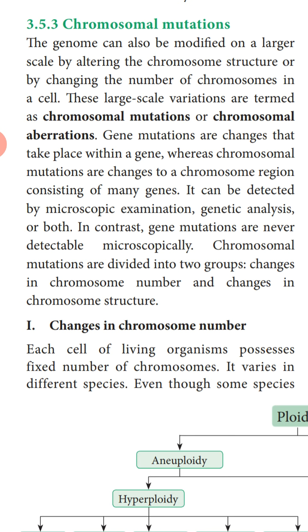The definition you can mark: genome can be modified — genome means the total number of genes found in an organism. The genome can be modified on a larger scale by altering the chromosome structure or by changing the number of chromosomes in a cell. These large scale variations are termed as chromosomal mutation or chromosomal aberrations. Gene mutations are changes that take place within a gene, whereas chromosomal mutations are changes to a chromosome region consisting of many genes.